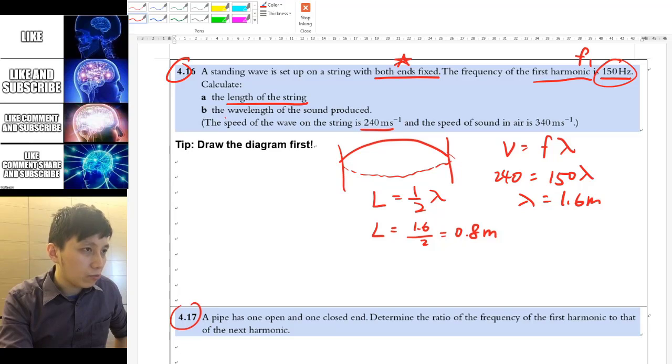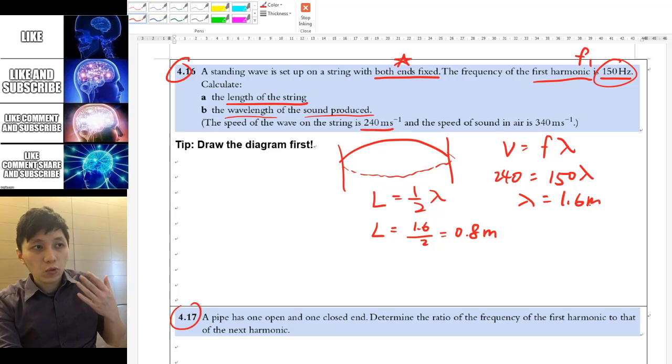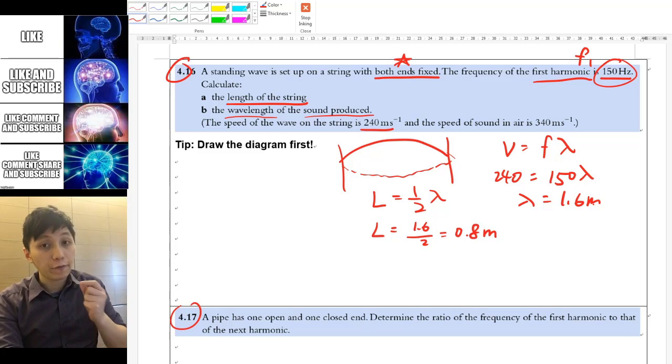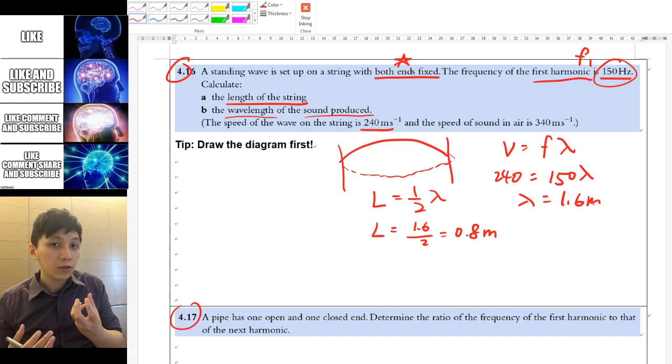Part B is asking you the wavelength of the sound that is produced. Be careful, the wavelength of the string doesn't mean the wavelength of the sound. However, the frequency is going to be the same. So it's the same idea as I always say, for example, the vocal cord vibration would be vibrating at a certain frequency.